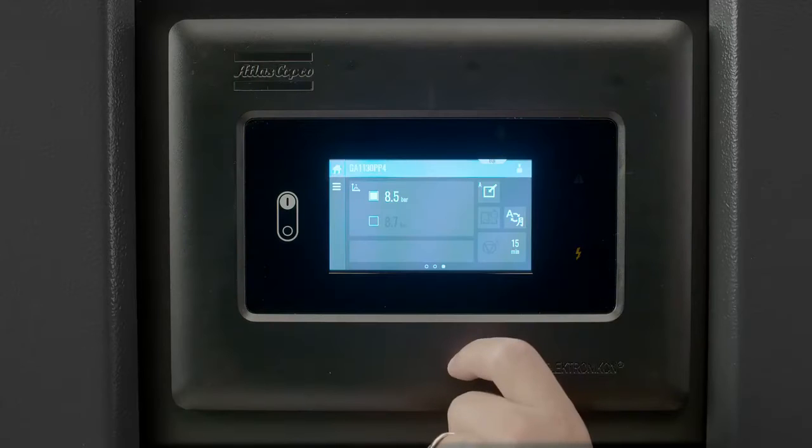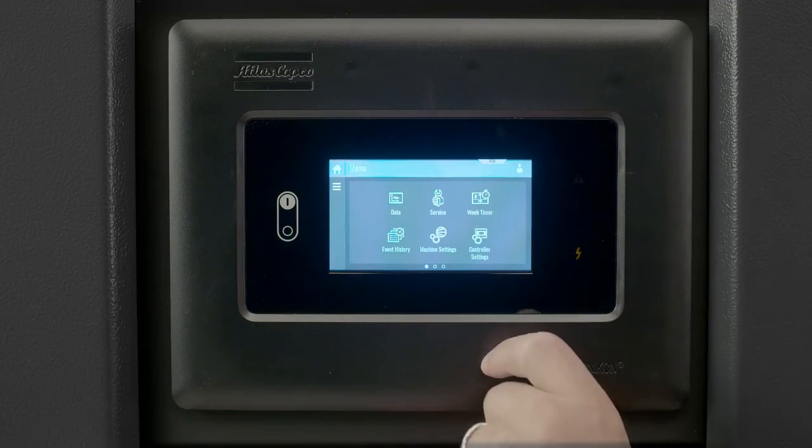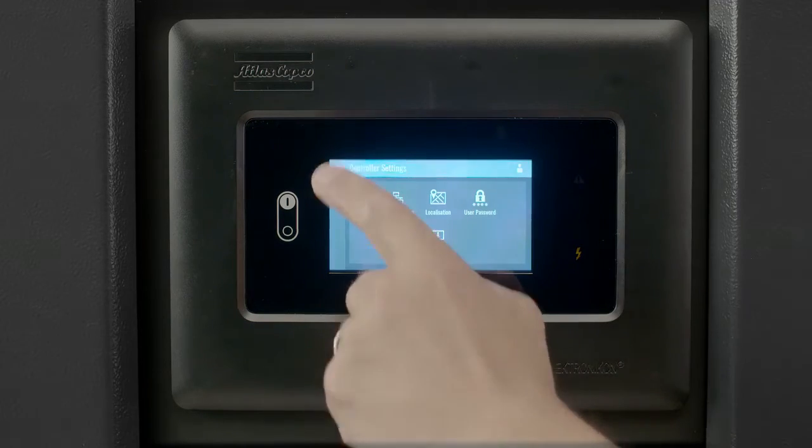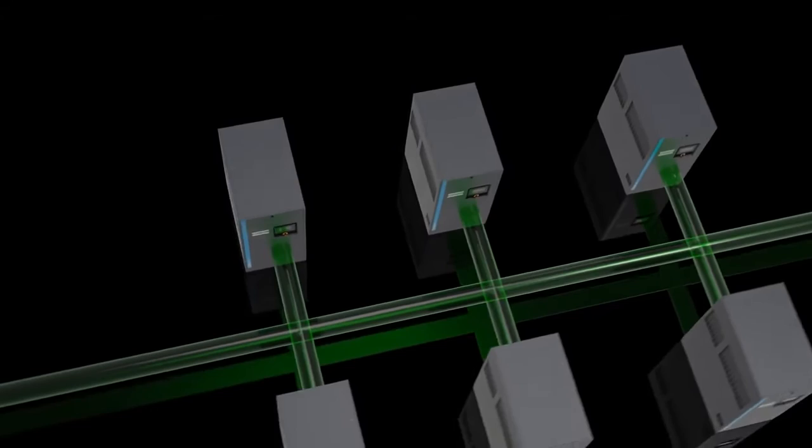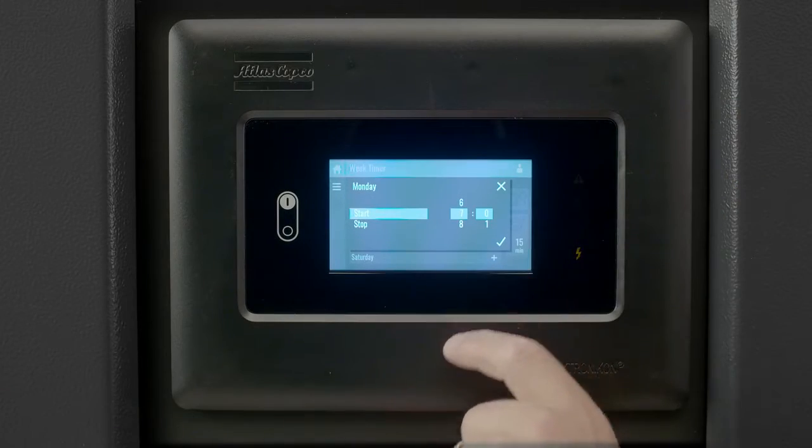The high-definition touchscreen is easy to use and built to perform in the toughest conditions. But the real added value is what it can do to improve efficiency, maintenance and reliability. The electronic on-touch comes with the same energy saving functions as the previous electronic on-graphic. This includes multiple compressor control, week time and more.